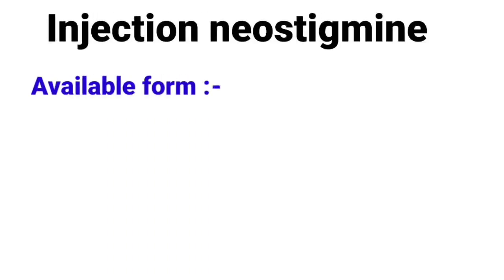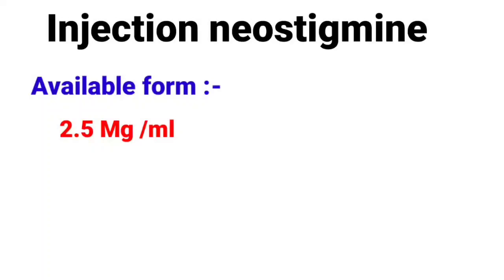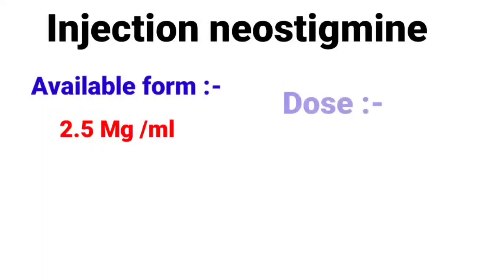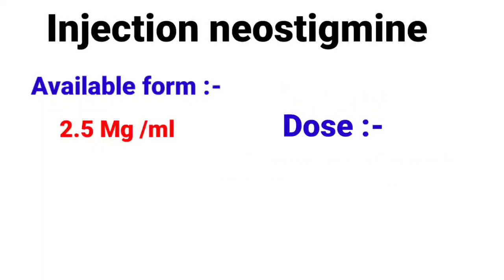Injection Neostigmine is available from 2.5 mg per 1 ml ampoule. Its dose is 0.04 mg per kg body weight.